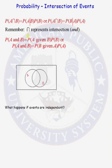Remember, the upside-down U represents intersection, and anytime you see an intersection you can substitute the word 'and.' So the probability of A and B occurring equals the probability that A occurs given that B occurred, times the probability of B occurring. Or, the probability of A and B occurring is the probability that event B occurs given that A has occurred, times the probability of event A.